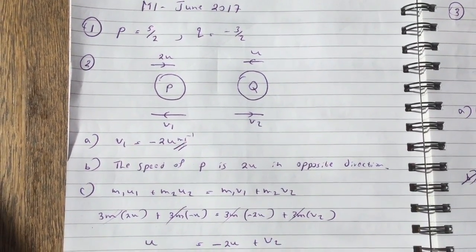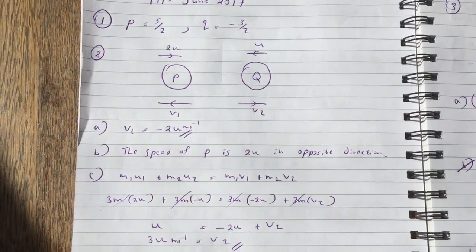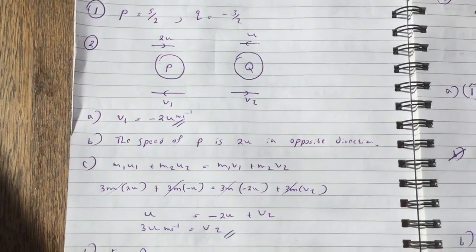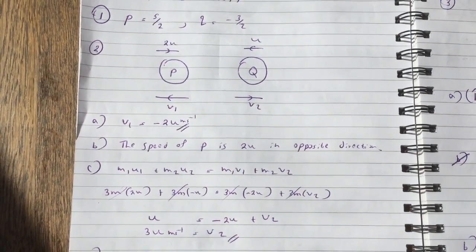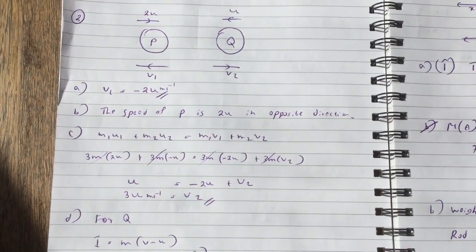Question 2 is a collisions question, so I have drawn the diagram here. So velocity of 1 equals minus 2u meters per second. The speed of P is 2u in opposite direction or the directions are reversed.